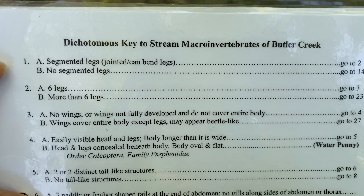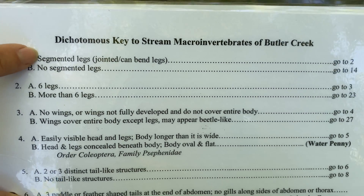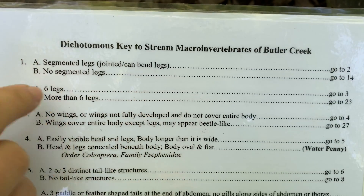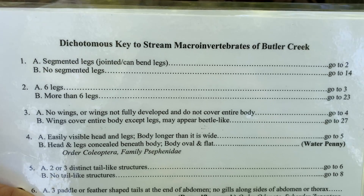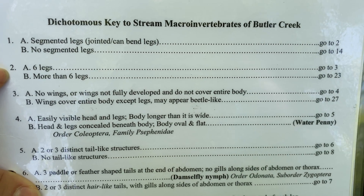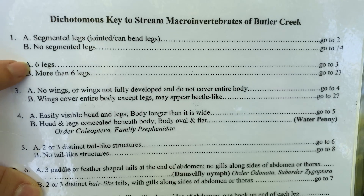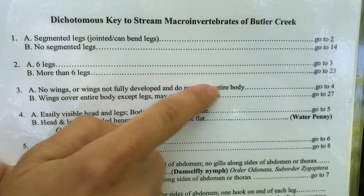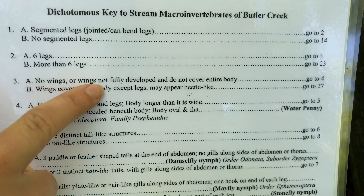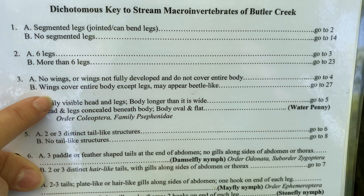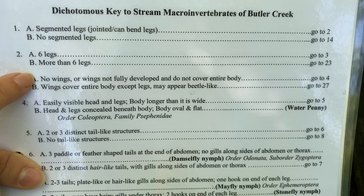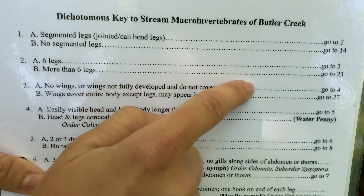Again we start at number one — segmented legs or not. Its legs were bent, which tells us there are segments — it's got elbows and knees — so we go to two. Number two is about number of legs: it has six legs, so we go to three. Number three asks: no wings or wings not fully developed and not covering the entire body, or wings covering the entire body appearing beetle-like? I did not see any wings, so we go to four.